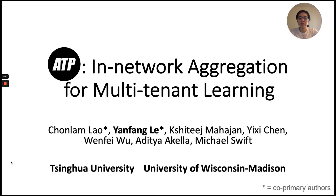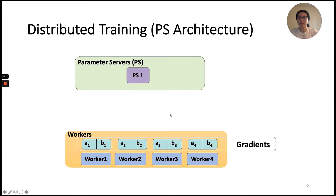Hello, I'm Yanfang and today I'm going to describe ATP, an in-network aggregation service tailored for multi-tenant, multi-rack machine learning jobs. Our work seeks to accelerate distributed training. Before I dive into ATP, let's first have a brief overview of how distributed training works with the parameter server architecture, which ATP is designed for.